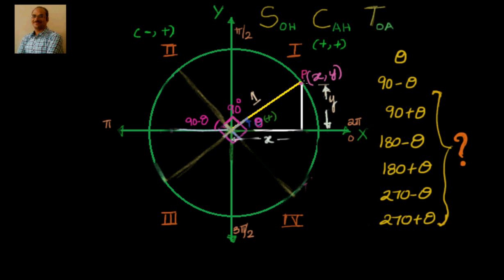We know that a particular point is making an angle theta in the counterclockwise, positive direction. We are interested in finding how values change if you add or subtract quadrant angles. For 90 plus theta, I have drawn a perpendicular to the line — let's call this OP — so the angle it makes with the positive direction of the x-axis is 90 plus theta. Since this total angle is 180 degrees, this becomes 90 minus theta. We know that theta and 90 minus theta are complementary angles. That means sin(90 − θ) = cos θ, and cos(90 − θ) = sin θ.